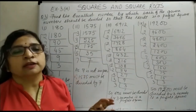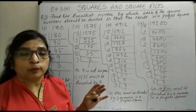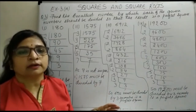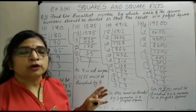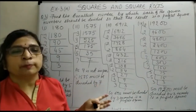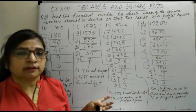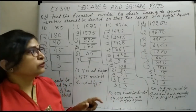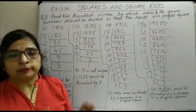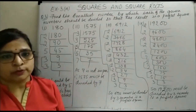In division, we always have to take care of finding that smallest number. You divide by the number which is unpaired — the one whose pair does not exist in the prime factorization. You divide by that unpaired number to make it a perfect square.